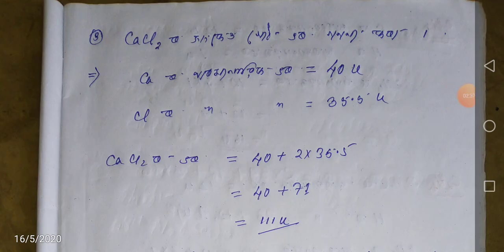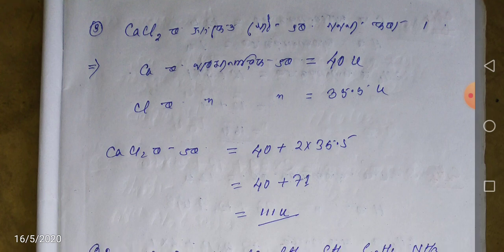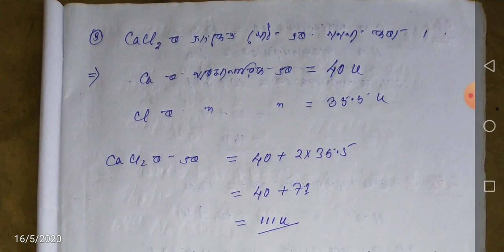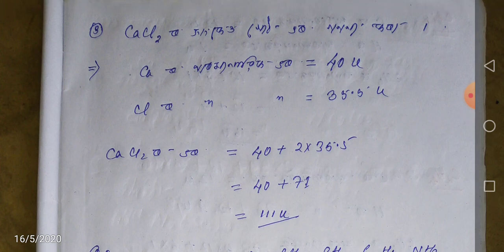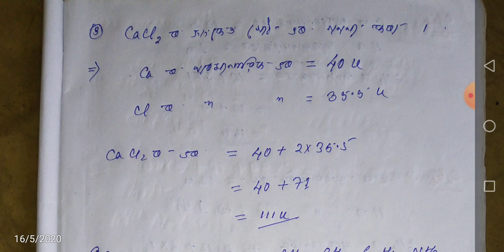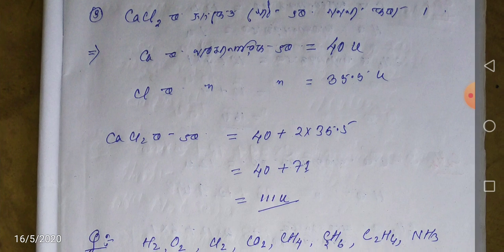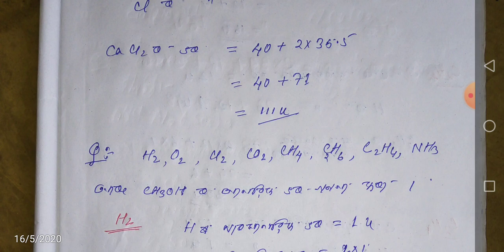CaCl2 is calcium chloride. I am going to add calcium and chlorine. Calcium and chlorine: 35.5, so it is CaCl2. Calcium has a total of 40 plus chlorine — 40 plus 71 equal to 111 U for CaCl2.